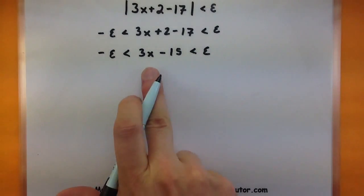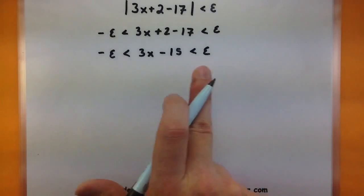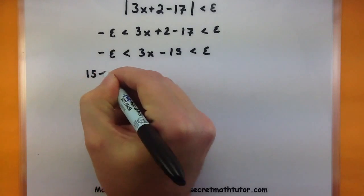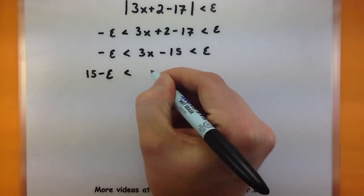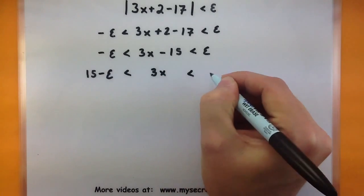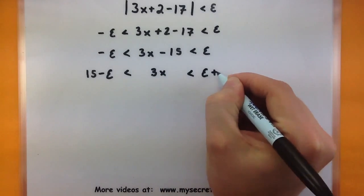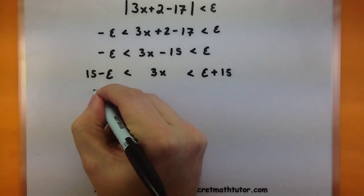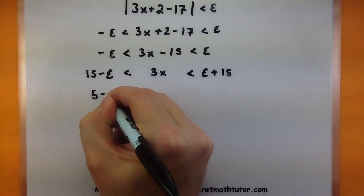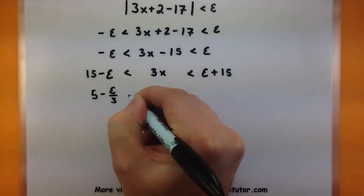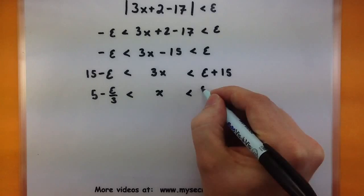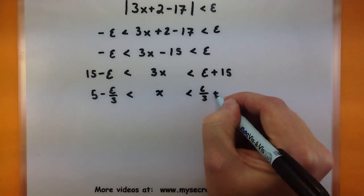Now I want to keep working to get this x all alone. So let's go ahead and add a 15 to both sides. Now let's go ahead and divide everything by 3. So 15 divided by 3 is 5 minus epsilon over 3 is less than x is less than epsilon over 3 plus 5.